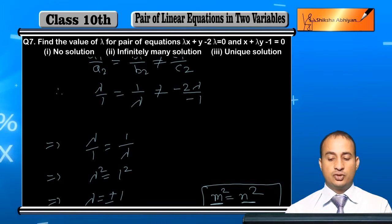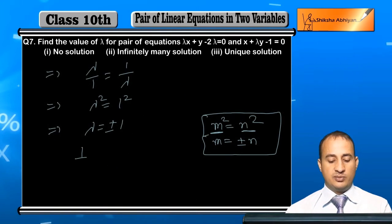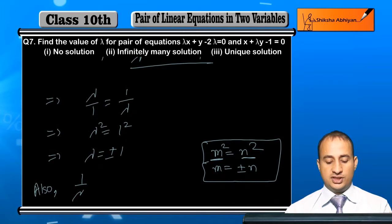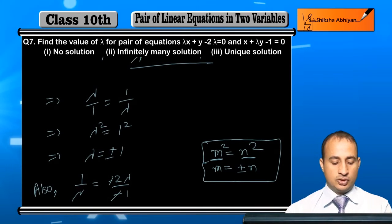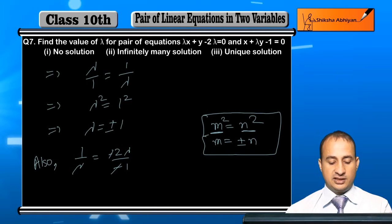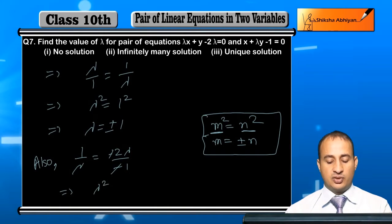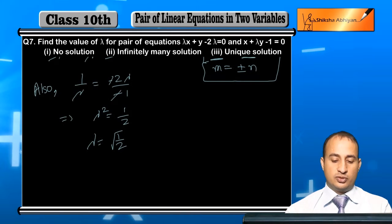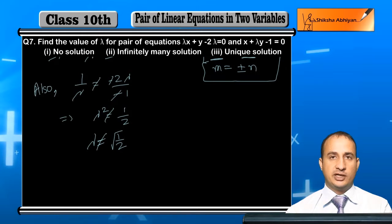Now checking the not-equal condition: 1 by lambda must not equal minus 2 lambda upon minus 1. Simplifying, this gives lambda squared equals 1 by 2, so lambda equals root of 1 by 2. For no solution, lambda must not equal 1 by root 2.